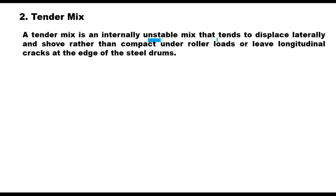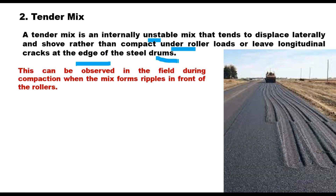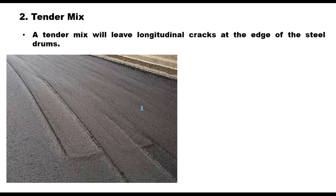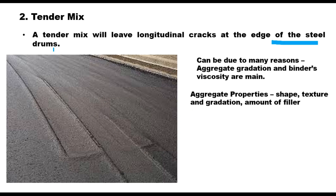The second factor is tender mix. A tender mix is an internally unstable mix that tends to displace laterally and shove rather than compact under a roller, or leave longitudinal cracks at the edge of the steel drum. This can be observed in the field during compaction when the mix forms ripples in front of the roller. Either a lack of friction between particles or a lack of shear strength in the mix essentially causes tenderness.